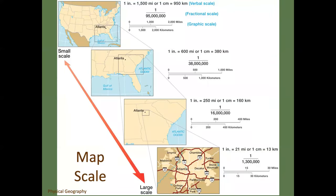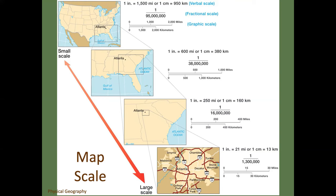Here's an image going from the United States, to the Southeast, to Georgia, to Atlanta. Notice the numbers — this number is larger than that number, yet this is the largest scale map. It shows you all the roads around the city of Atlanta, whereas the previous image just shows the state of Georgia, and the one before that shows the southeastern United States. Here you see the whole U.S.; here you see the Atlanta metro with enough detail to give directions.